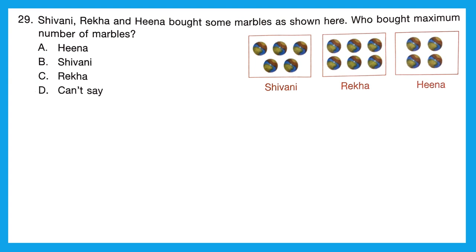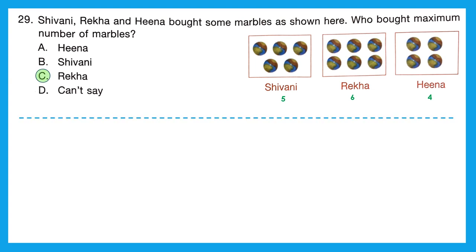Question 29: Shivani, Rekha, and Hina bought some marbles. Counting: Shivani bought 5 marbles, Rekha bought 6 marbles, and Hina bought 4 marbles. The greatest number is 6, which belongs to Rekha. So Rekha bought the maximum number of marbles. Our correct option is option C.